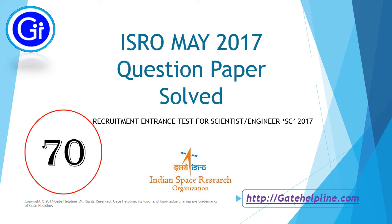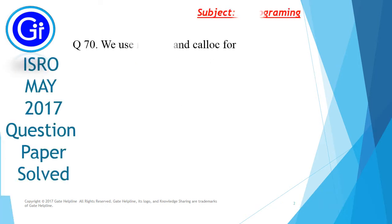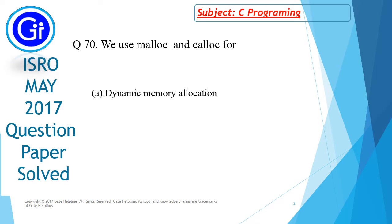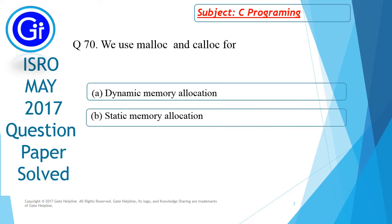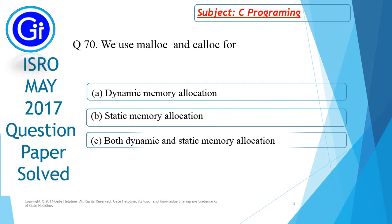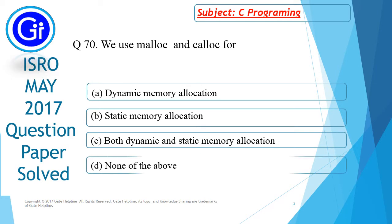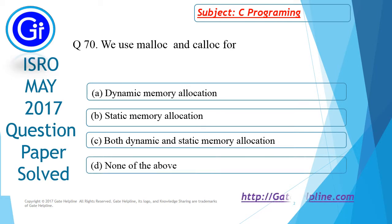Hi friends, in this video we will see question number 70 from ISRO May 2017 question paper. Question number 70 is: we use malloc and calloc for — and the options are: a) dynamic memory allocation, b) static memory allocation, c) both dynamic and static memory allocation, and d) none of the above.